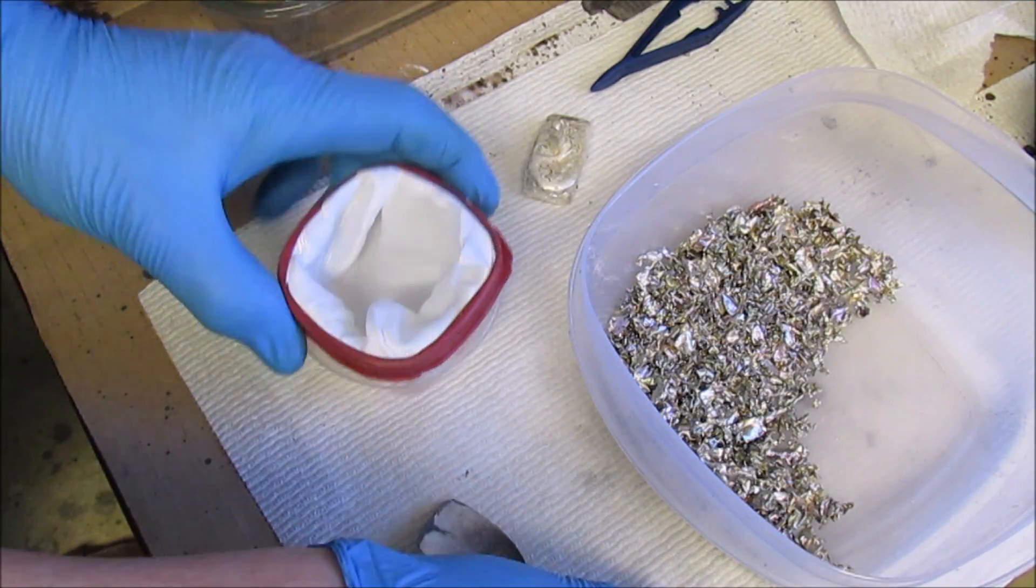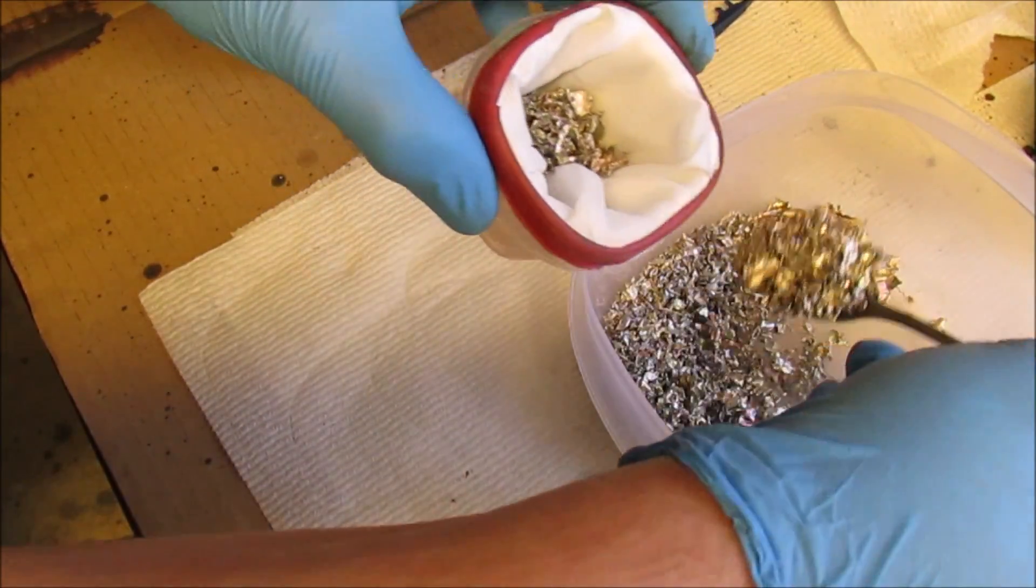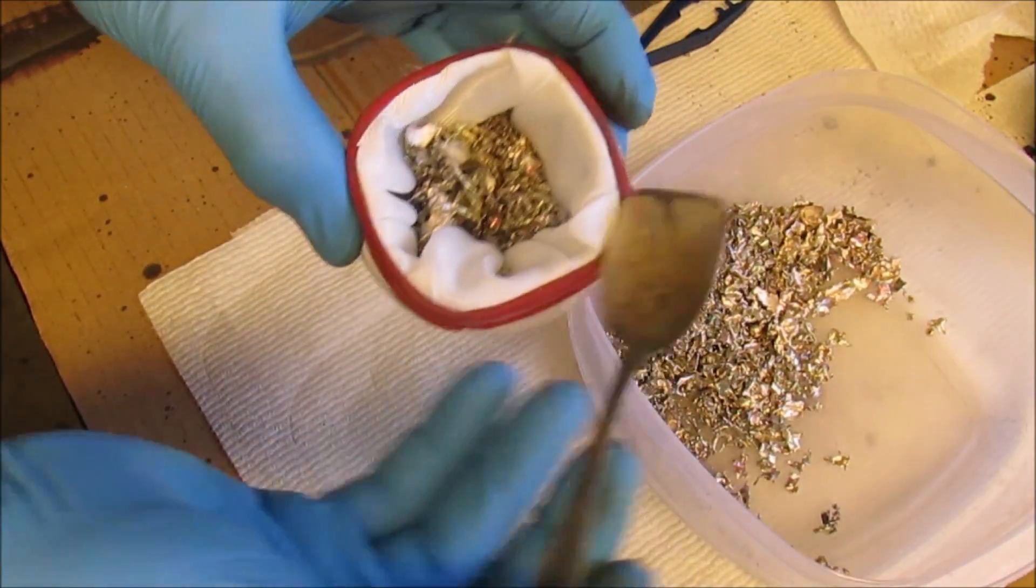Alright now I'm going to fill the freshly prepared anode basket here with impure silver. This is cement silver that's been melted and poured into water to form these granules.